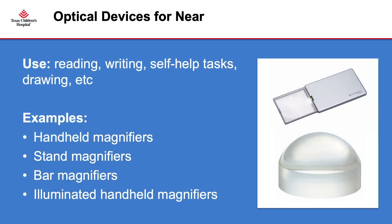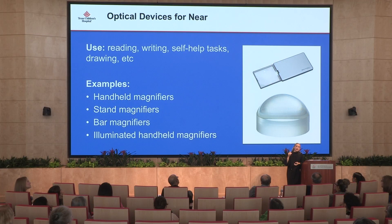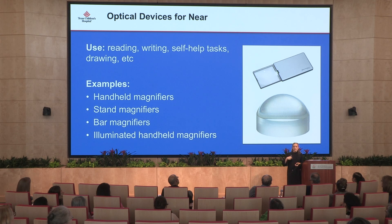Now getting into some of the devices we use — two of my favorites. The dome magnifier is great for kids starting as young as three or four. It has a nice big field of view and is easy to slide along the page, magnifying whatever they're looking at. We introduce devices early because children will need them throughout their entire lives. For slightly older school-age kids, the Easy Pocket is about the size of a credit card when closed — it slips in a pocket or backpack and is great for spotting, like reading a restaurant menu.